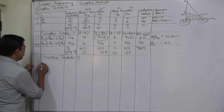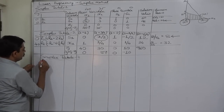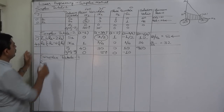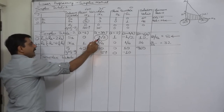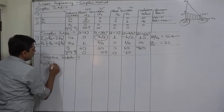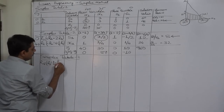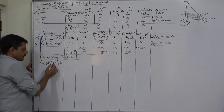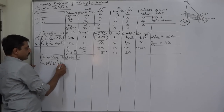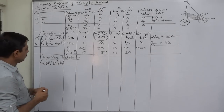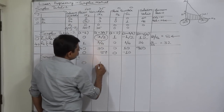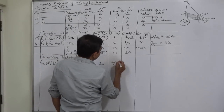We will prepare R5 in the place of R3 and R6 in the place of R4. R5 will be the key row divided by the key element — that is R3 divided by 3/2 — which means we multiply R3 by 2/3. So: 0 × (2/3) = 0; (3/2) × (2/3) = 1; 1 × (2/3) = 2/3; and (−1/2) × (2/3) = −1/3, giving 8.